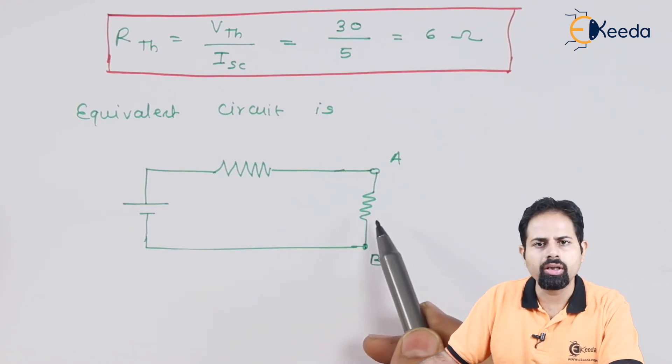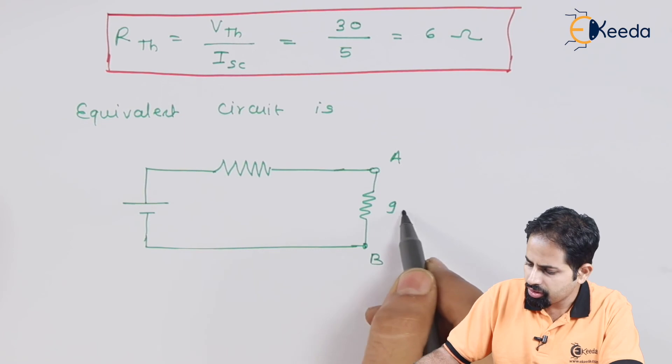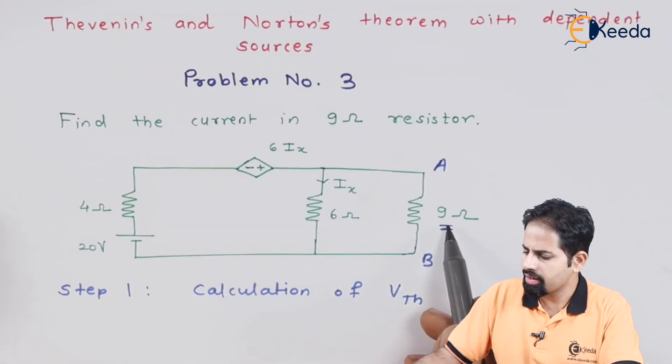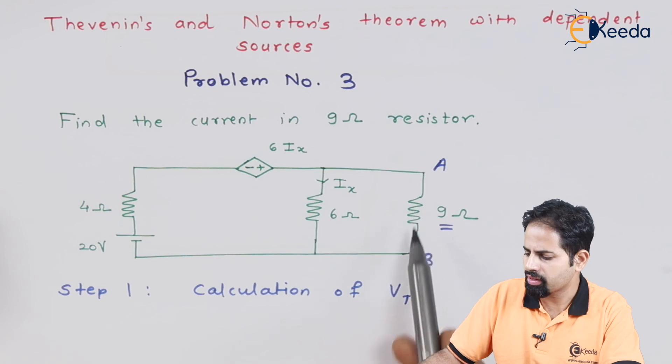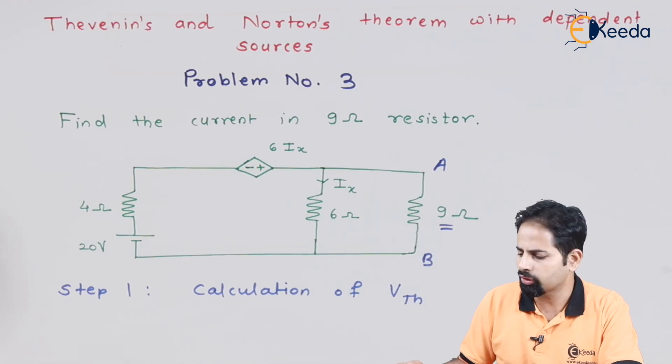This is the resistance across which current is to be calculated, which is 9 ohms. This is the resistance.